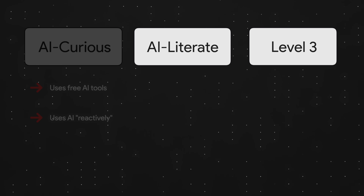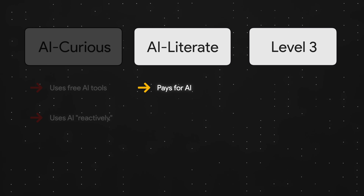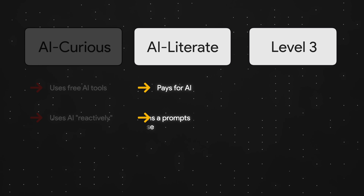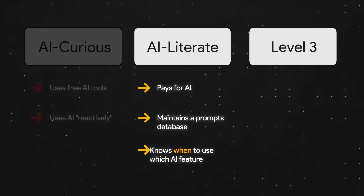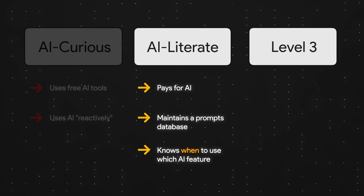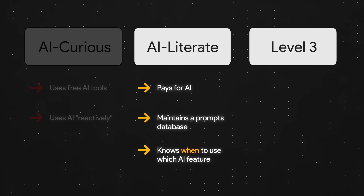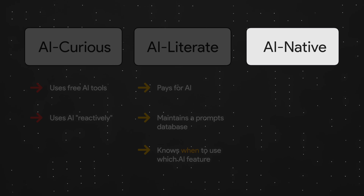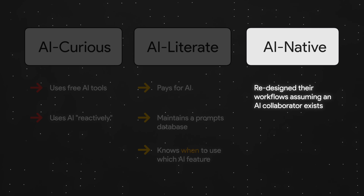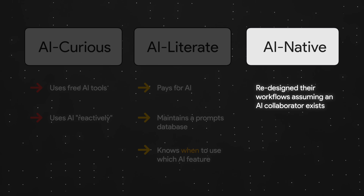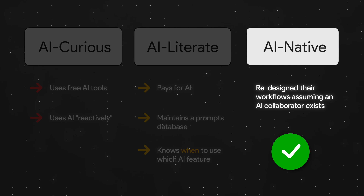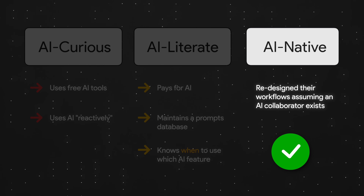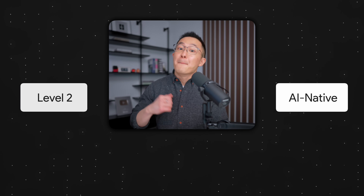Level two, we have the AI literate. These people pay for AI, maintain a prompts database, and they know when to use which AI feature and model. Level three is AI native. In a nutshell, these people have redesigned their workflows assuming an AI collaborator exists. Most professionals are stuck at level two.